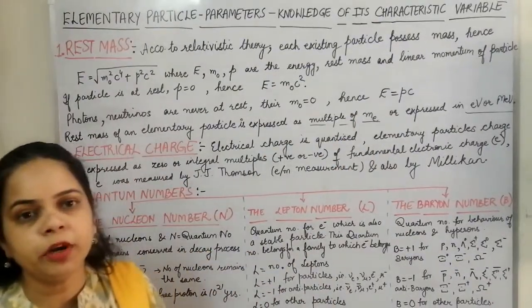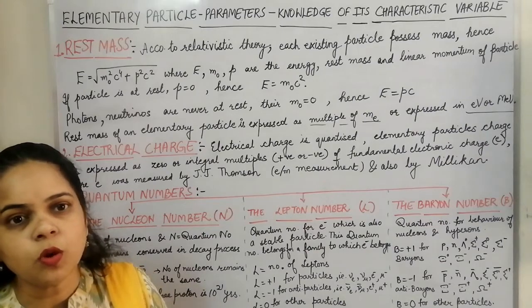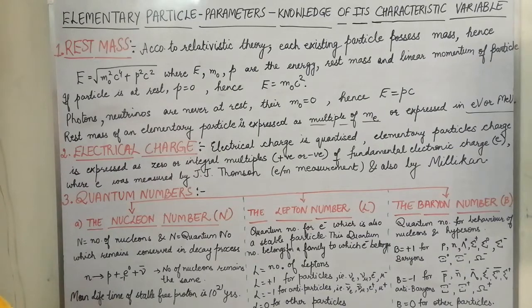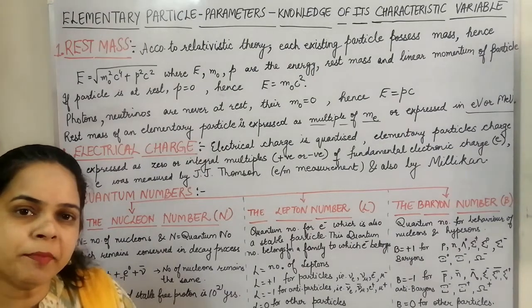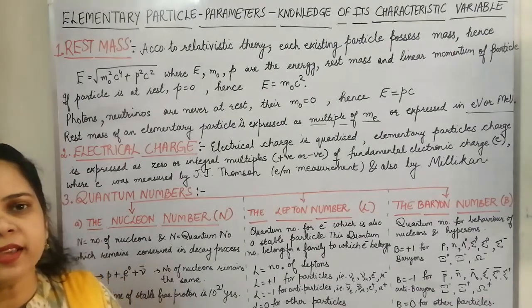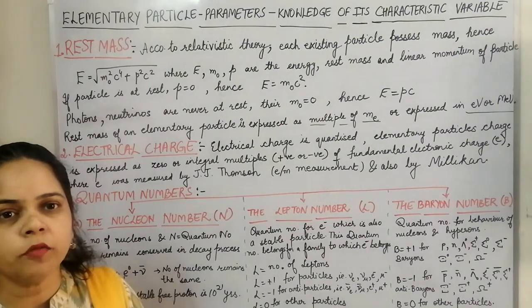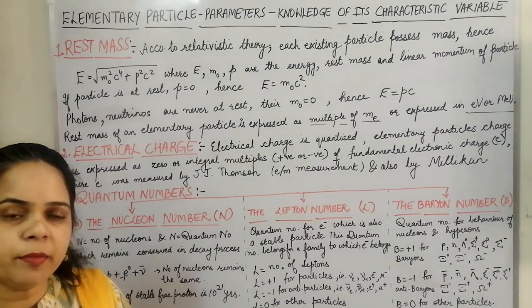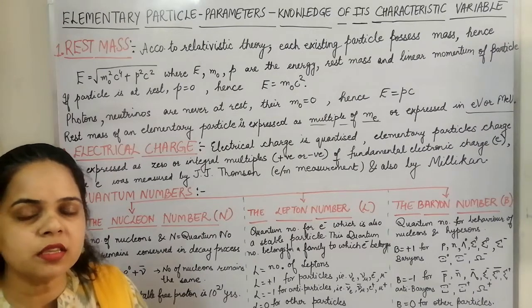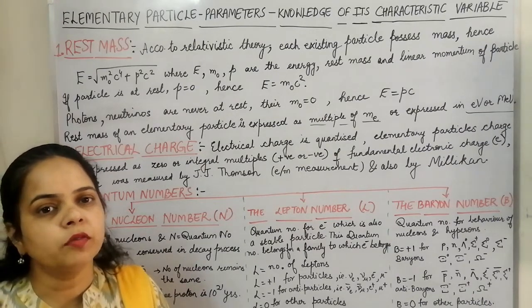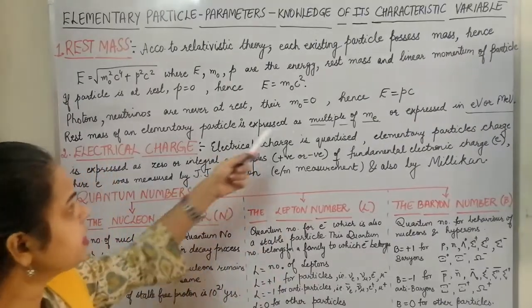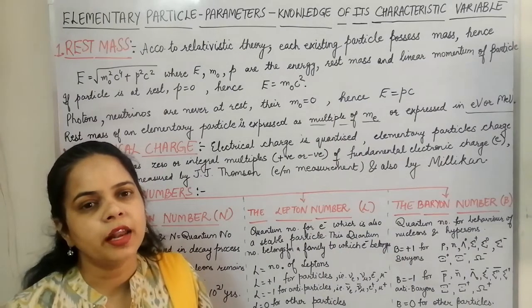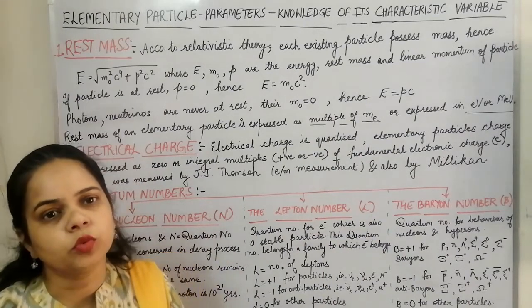For photons, neutrinos, and gravitons where m₀ equals zero, E equals the square root of p²c², which gives E equals pc. The rest mass is an important parameter for the elementary particle and is generally expressed as a multiple of the rest mass of the electron (mₑ), or in units of electron volts or mega electron volts.